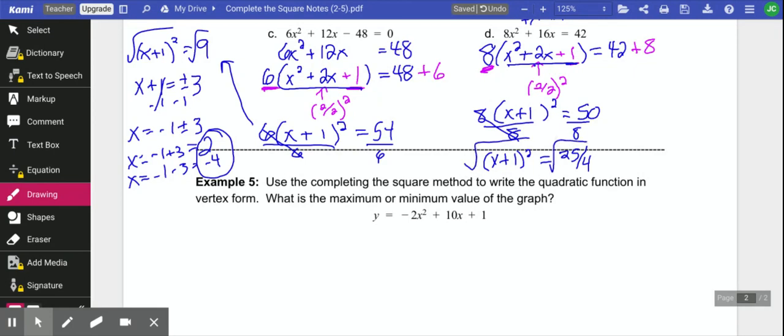We'll take the square root of both sides. Come up here for the next part. So I get x plus 1 equals plus or minus, the square root of 25 is 5, the square root of 4 is 2. My last step, I'm going to subtract 1 from both sides. So we get negative 1 plus or minus 5 over 2.